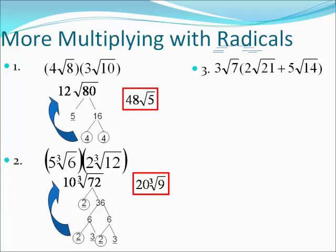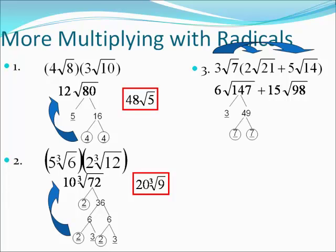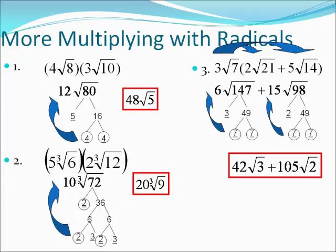On number three, we're going to distribute the 3√7 to both terms in the parentheses. Three times two is six, and seven times twenty-one is 147, so we get six√147. Plus three times five is fifteen, and seven times fourteen is ninety-eight, so plus fifteen√98. Breaking down 147: a group of sevens comes out and multiplies by the six to make forty-two, and the three stays inside. Breaking down 98: a group of sevens multiplies by the fifteen to make 105, and the two stays inside. Final answer: 42√3 plus 105√2.